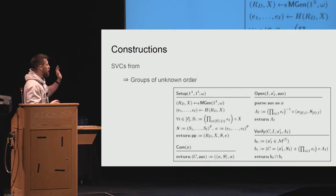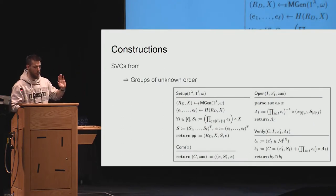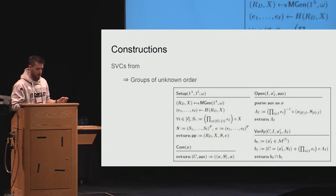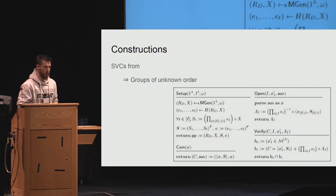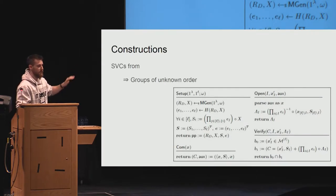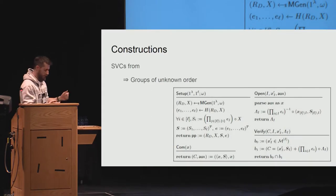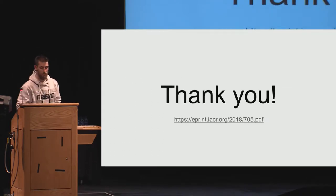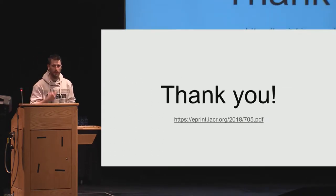I just want to briefly show the construction from groups of unknown order without going into details, mostly because Benedict will show you an improved construction. This is just to show that this is a simple scheme, nothing to be afraid of. On this note, I would like to conclude and pass the microphone to the next speaker.